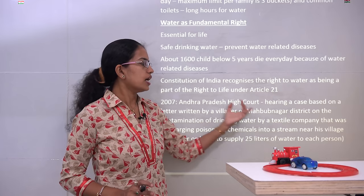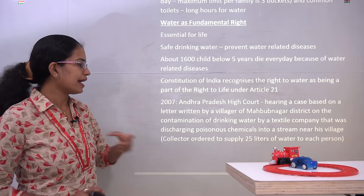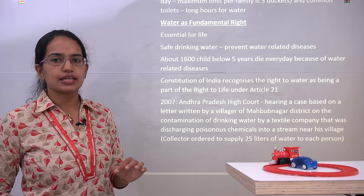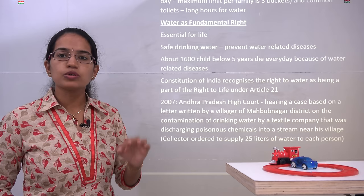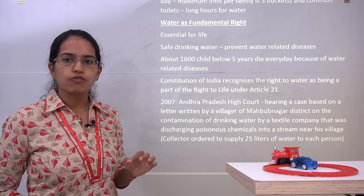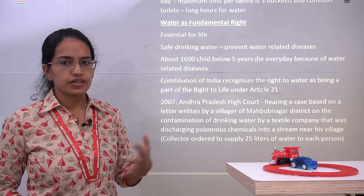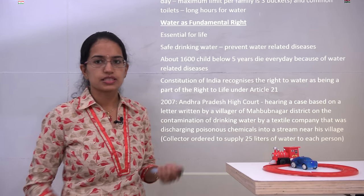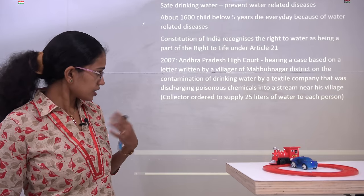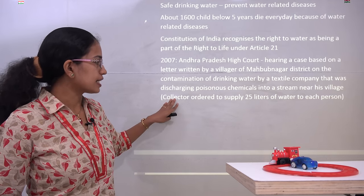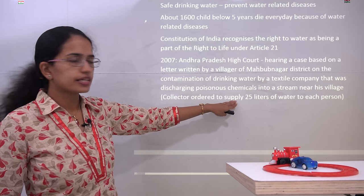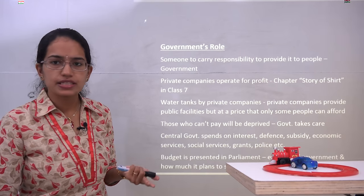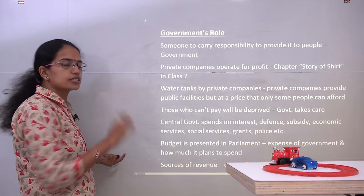In 2007, there was a hearing in the Andhra Pradesh High Court filed by a villager from Mahbubnagar district. He stated that the water being supplied in their area was in one of the most unportable forms, because a lot of industrial waste was being discharged into their water supply, resulting in toxic and poisonous substances in the water. As a result, the collector immediately ordered a supply of 25 liters of water to each person. These are the kinds of public interest litigations that have been filed in court.